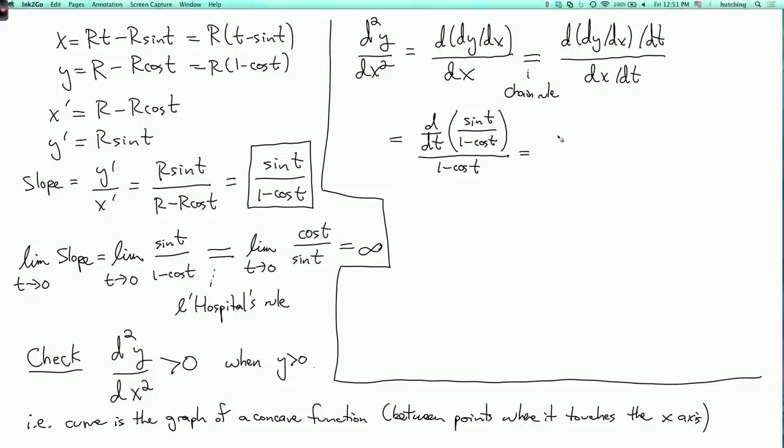So, by the quotient rule, on top here, I have 1 minus cos t times the derivative of sin t, which is cos t, minus sin t times the derivative of 1 minus cos t, which is another sin t. Oh, and I forgot, when I, this dx dt, this is actually multiplied by r, there's a little typo there.